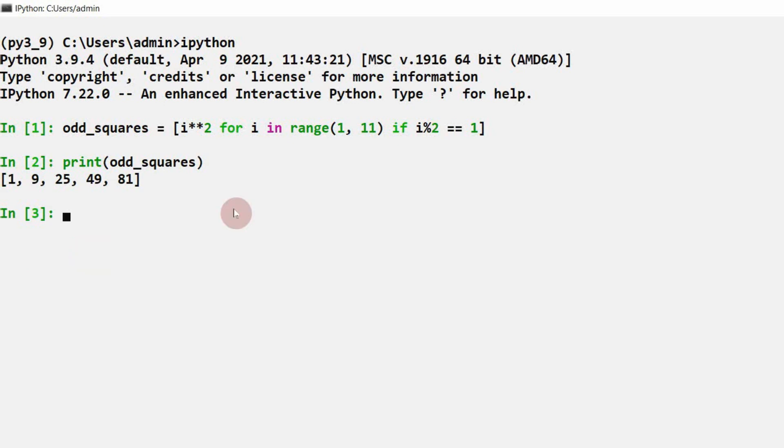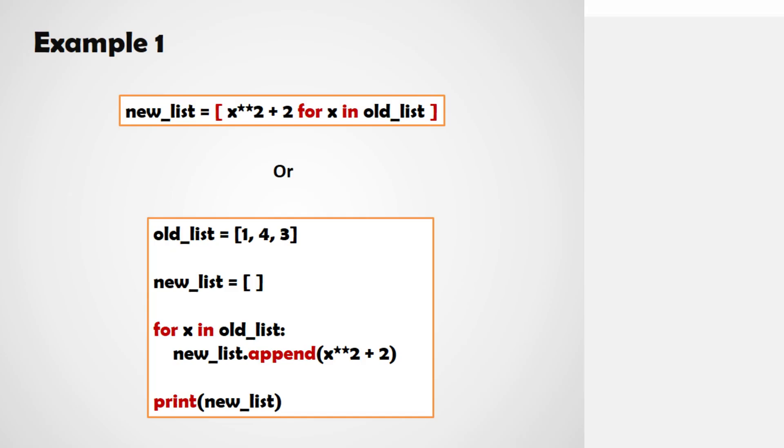So that's all. In this way we can use list comprehension to get a new list from any existing iterable. We can do the same thing using a for loop or while loop, but using list comprehension to get a new list is the efficient way of doing it in Python.